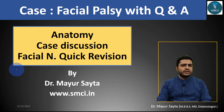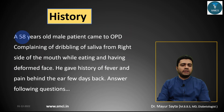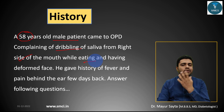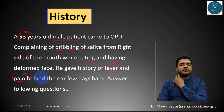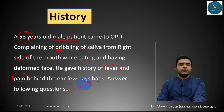Hello friends, myself Dr. Mayur Saita, and in this video we are going to discuss a case discussion on facial nerve palsy. Let's begin with the history of the patient. A 58-year-old male patient came to the OPD with complaints of dribbling of saliva from the right side of the mouth while eating, awkward deformity of the face — no movement on one side — and a history of fever and pain behind the ear a few days back, suggesting a viral fever.